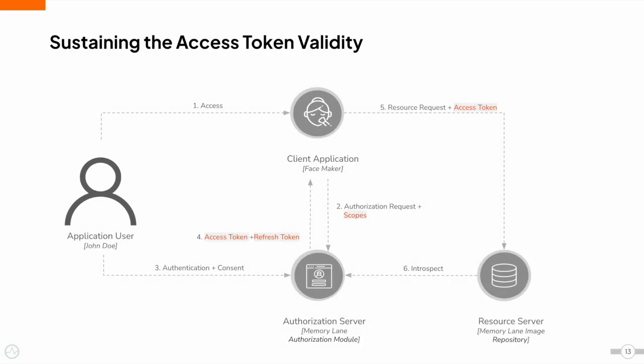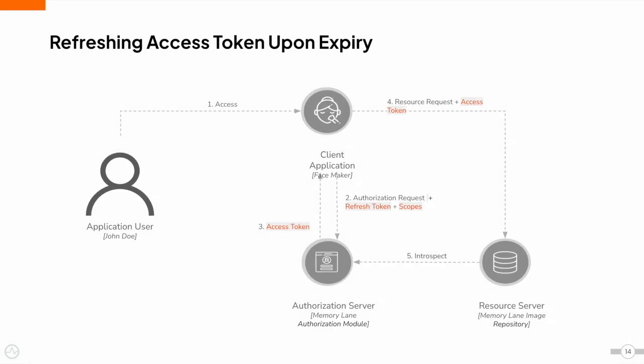For security reasons, the access token has a validity period. If the access token validity period is configured as 30 minutes, it cannot be used to access resources beyond that time period. So every time the access token expires, Facemaker will have to request for a new access token and the resource owner will have to provide consent. This is not a user-friendly approach in some cases, and that's when the refresh token comes into the picture. When a client application sends an authorization request, it can get a refresh token from the authorization server, which can later be used to refresh the access token. When the access token expires, the client application can send a silent request to the authorization server to refresh the access token, and in return, the authorization server will send a fresh access token.